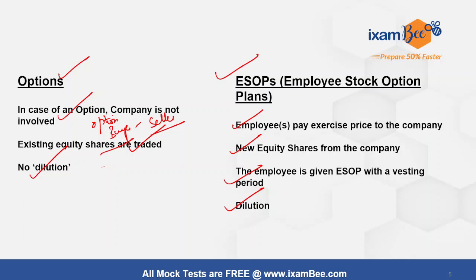So that was all for the difference between convertible bonds, warrants, options, and ESOPs. Thank you so much.